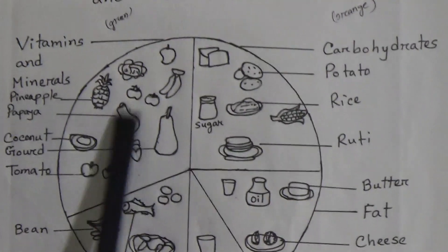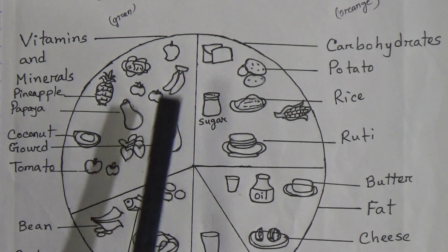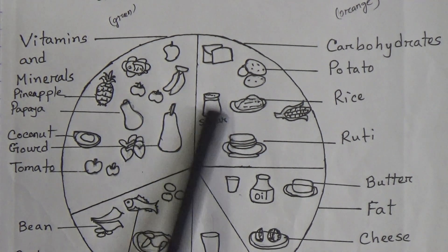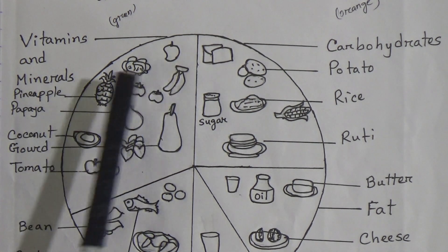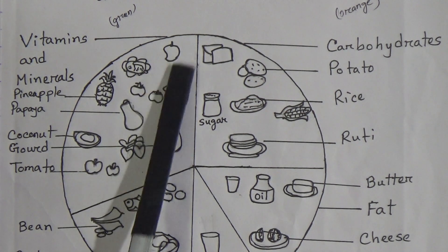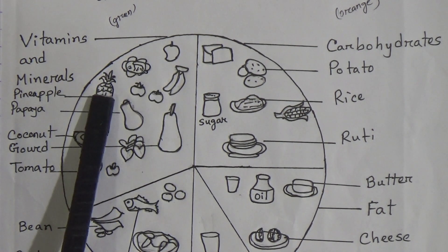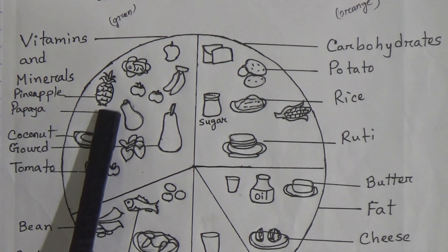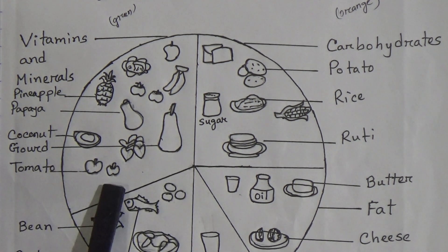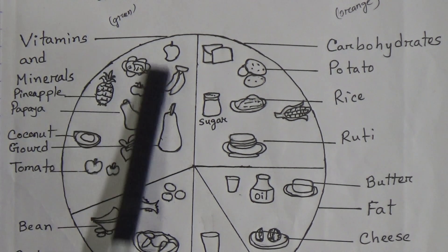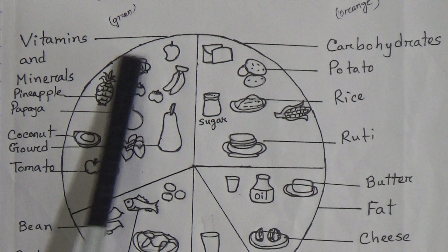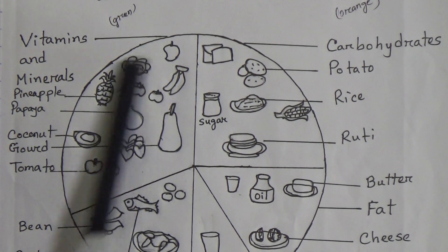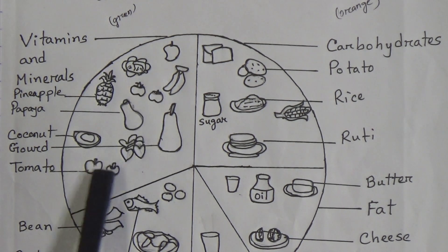My dear students, see this figure — see this picture properly. This is the figure of a proper balanced diet. This portion is vitamins and minerals. You have to draw these elements in this section for your draw, label, and color the picture. Vitamins and minerals sources shown here are: pineapple, papaya, coconut, and tomato. This is the sources of vitamins and minerals. You have to first draw this figure, then color it also. The color for this portion will be green.